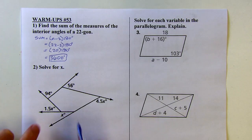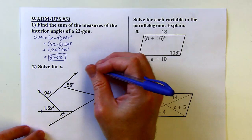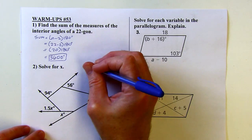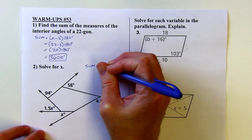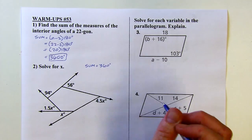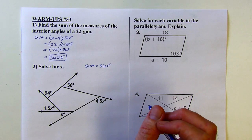Alright, next up, these are exterior angles for this polygon. The exterior angles are always going to be 360 degrees, no matter how many of them there are for any polygon.